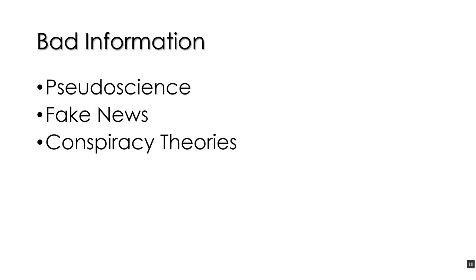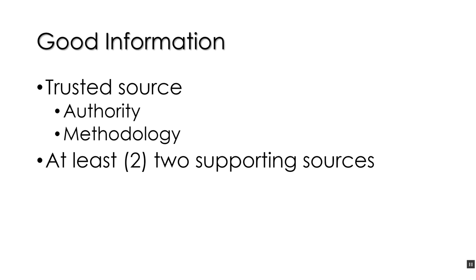We're going to look at three types of bad information today: pseudoscience, fake news, and conspiracy theories. Let's first start by talking about good information. Good information comes from a trusted source — a source that is an authority in the field, using standard research methodology or standard journalist methodology, or some standard recognizable methodology. First, you're going to look for trusted sources.